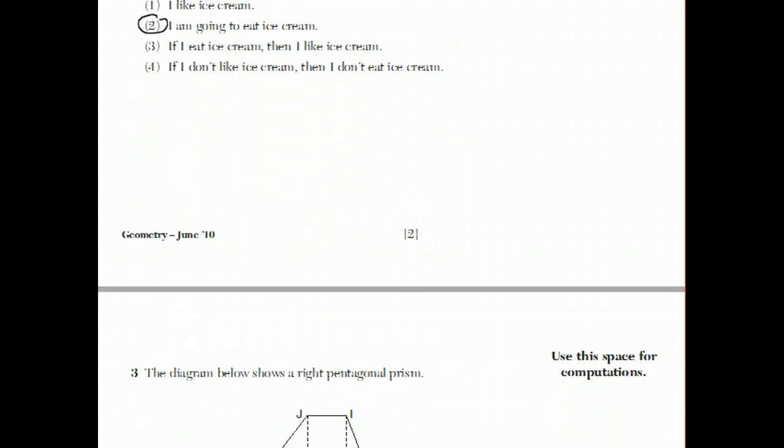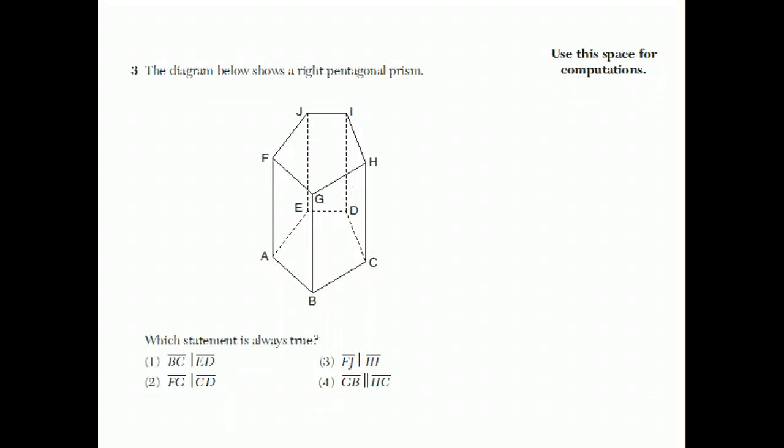Moving on to question number three. This is a three-dimensional picture. It's hard to visualize these things sometimes, but the dotted lines are things you wouldn't see if this was a solid figure. So that's sort of behind the figure. It's a right pentagonal prism. What's meant by that is the base is a pentagon with five sides. And the other sides, the top and bottom are pentagons, and the other sides are all rectangles because this is a right rectangle prism means that the rectangles are all perpendicular to the sides that make up the pentagon. And they want to know which statement is always true. And these are supposed to be parallel symbols that didn't come out for some reason. So, take a second to do it yourself. Pause. Welcome back.